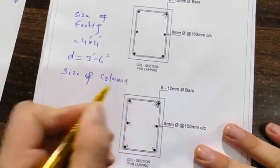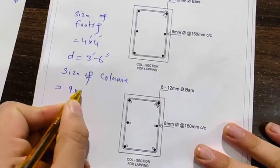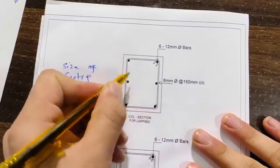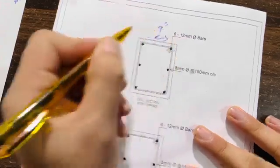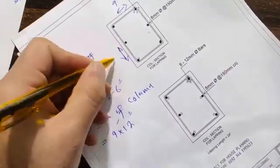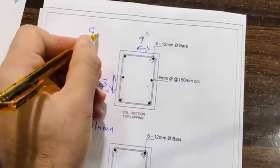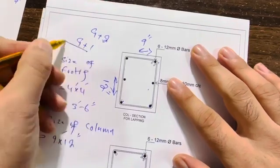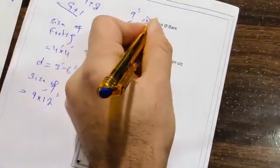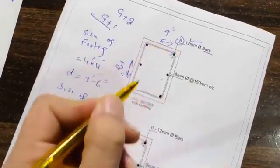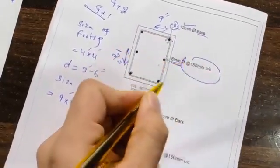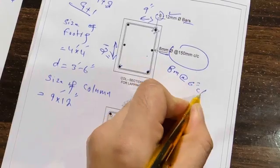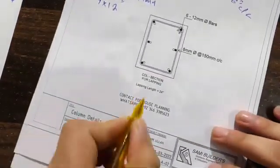The column size is 9 by 12 inches. We have 6 numbers of steel rods — you can see: one, two, three, four, five, six. The width is 9 inches and the depth is 12 inches, designed for G plus two but usable for G plus one. The steel rod diameter is 12 millimeter. The stirrup diameter is 8 millimeter with spacing of 150 millimeter center to center — that is 6 inches center to center.